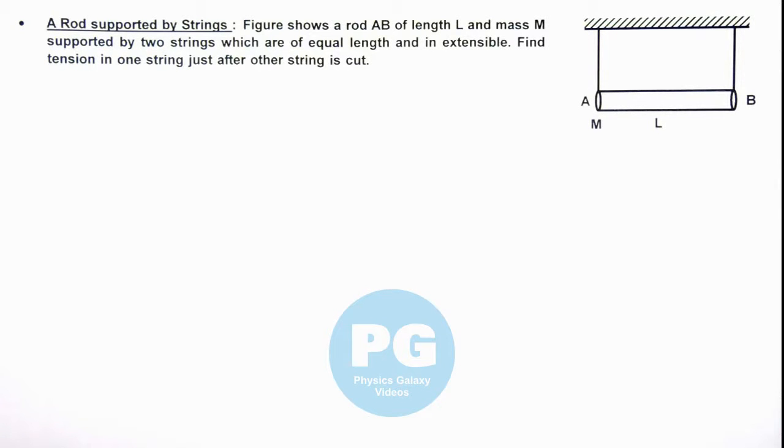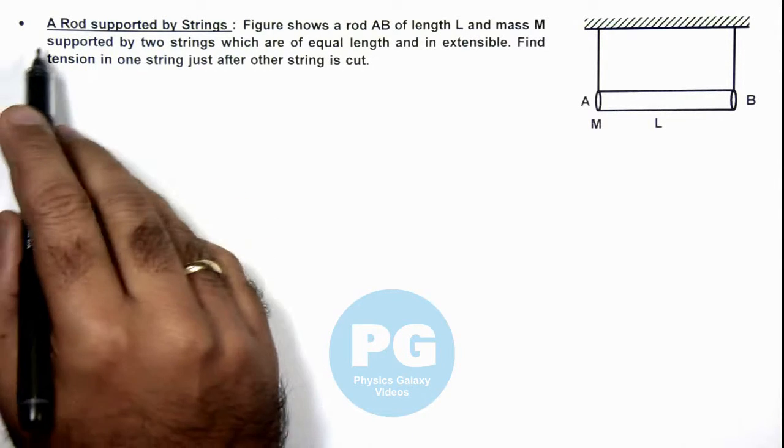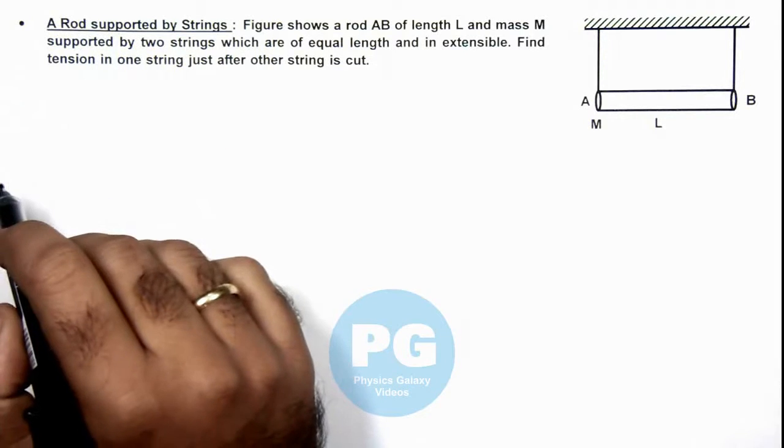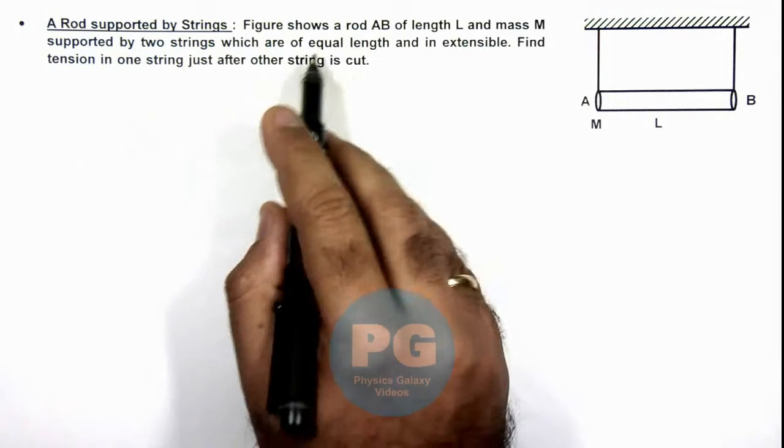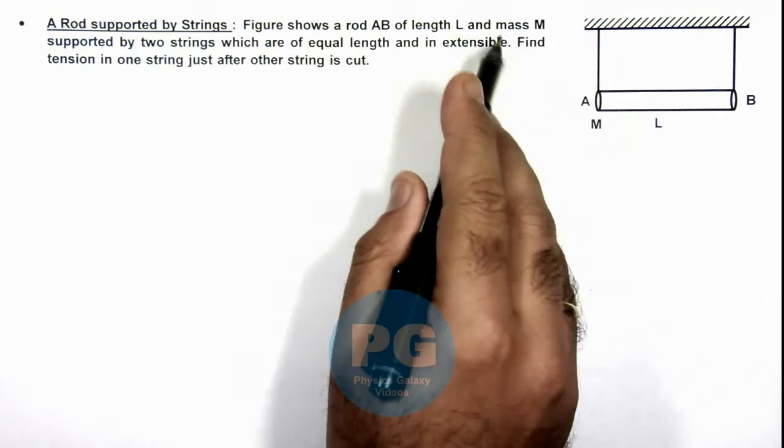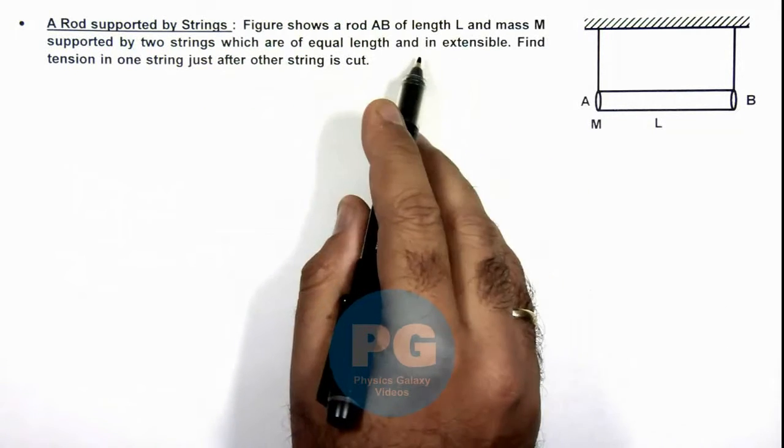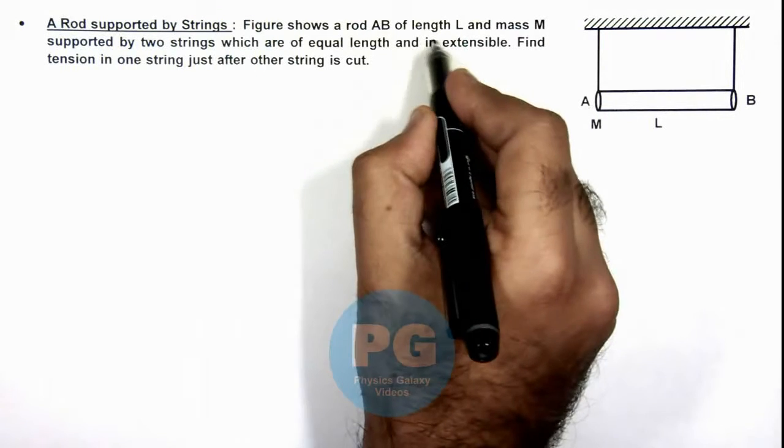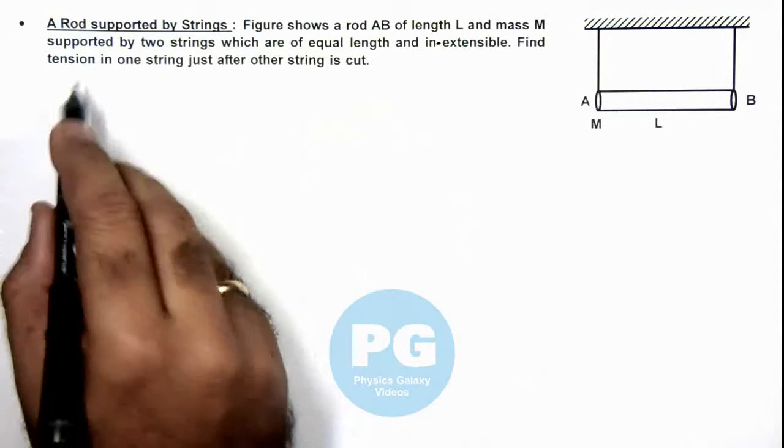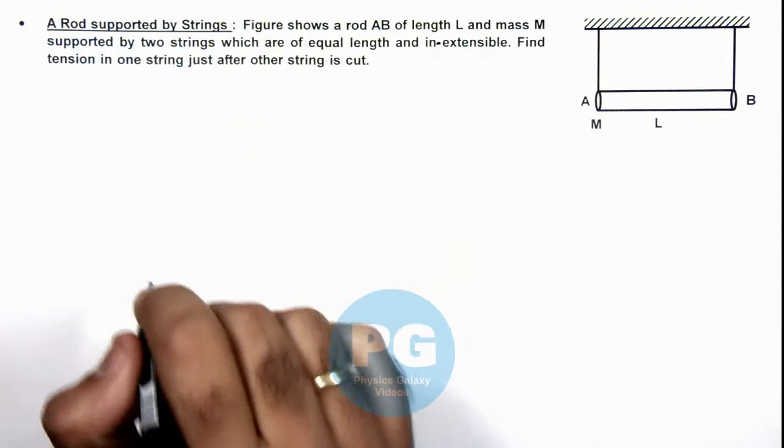In this illustration we'll analyze the situation of a rod supported by strings. The figure shows a rod AB of length L and mass M supported by two strings which are of equal length and inextensible. We are required to find tension in one string just after the other string is cut.